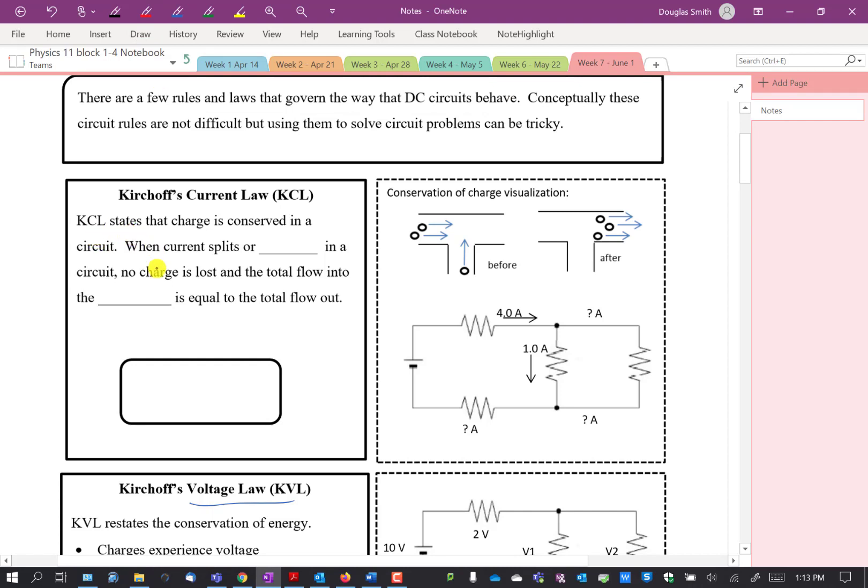Kirchhoff's current law states that charge is conserved in a circuit. When current splits or joins in a circuit, no charge is lost and the total flow into the junction is equal to the total flow out. This diagram here shows that if you have a wire with current flowing this way and another wire with current flowing this way and they come together, if you have two plus one charges going into the junction, you'll have three come out. So what we say is that the total current in is equal to the total current out.